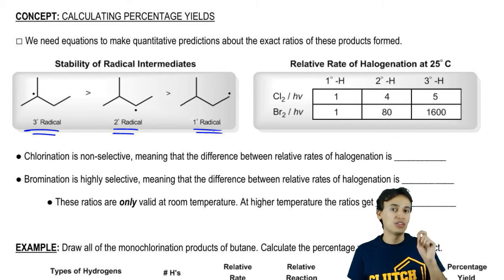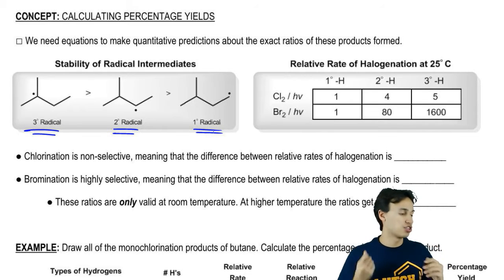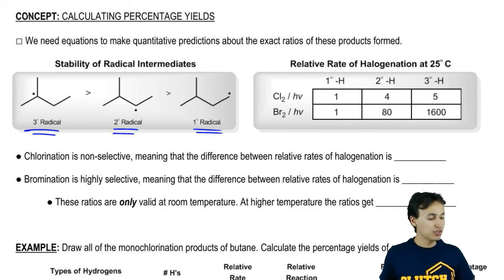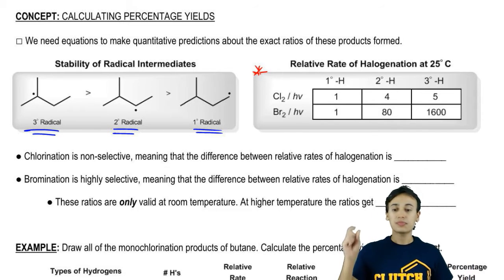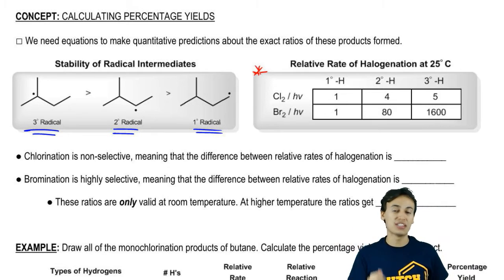It turns out that we can calculate that knowing the relative rate of halogenation at a certain temperature. Here you see this is a very important little table here. These are the relative rates of different types of halogenations at 25 degrees Celsius or room temperature. Let's just go through these numbers really quick so you understand what it's meaning.